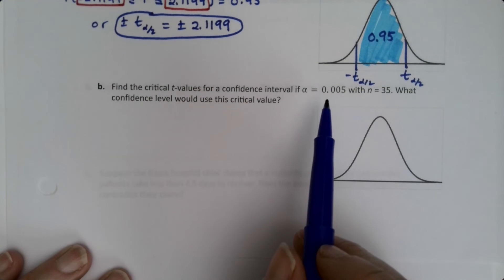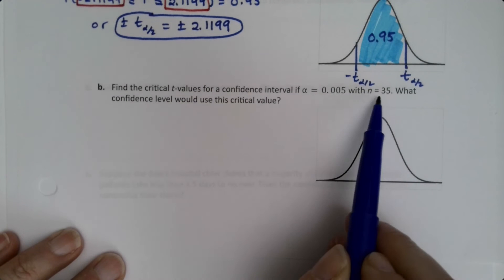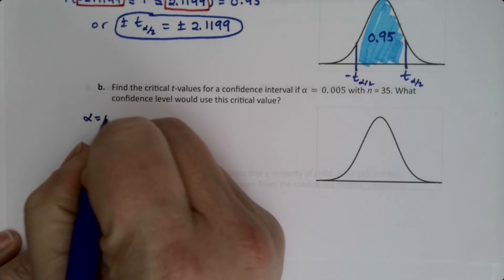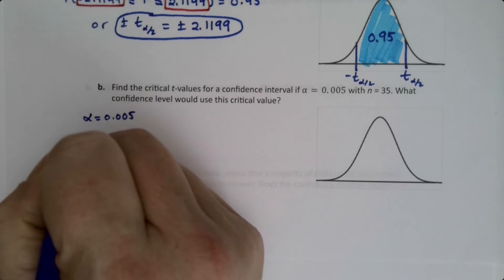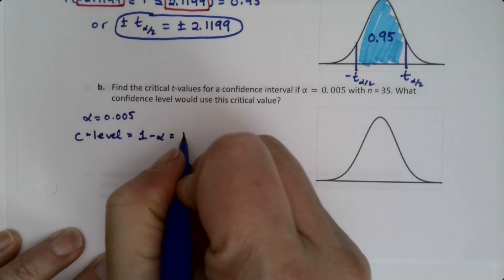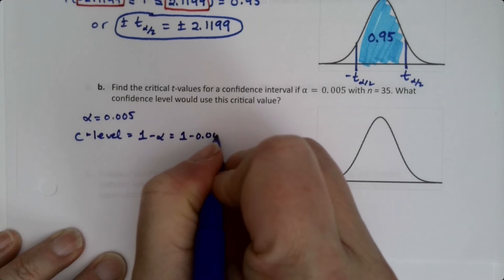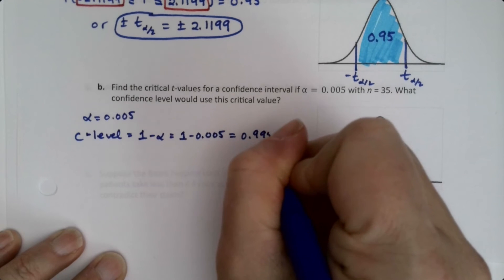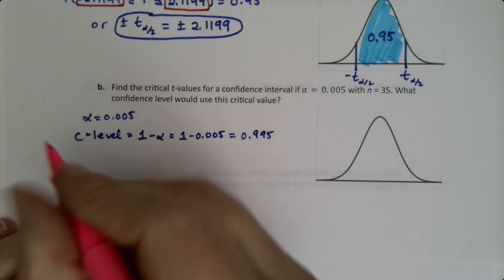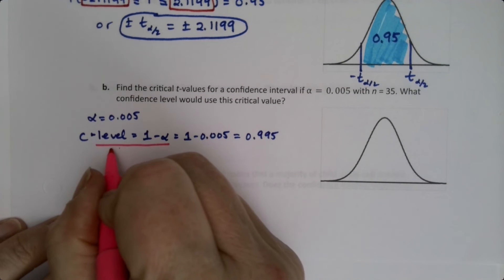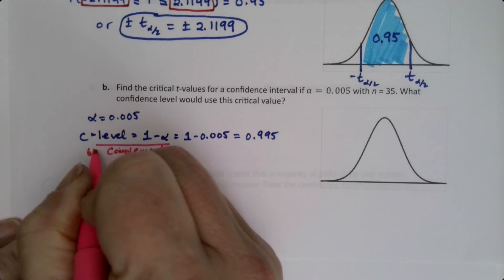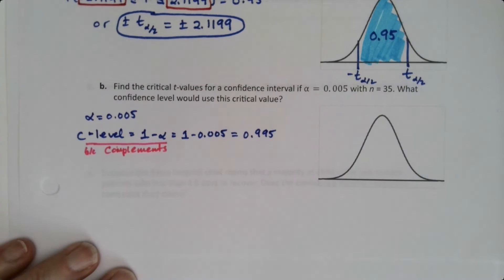Well down here, I was a little bit sneaky, and I gave you alpha, and n is equal to 35. Okay, so if alpha is 0.005, the confidence level is 1 minus alpha because they're complements of each other. Alright, we can just make a little note. Right, because they're complements, that's how that works.